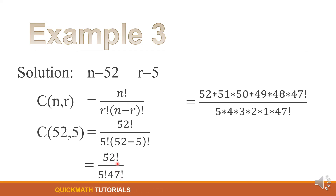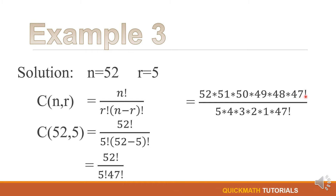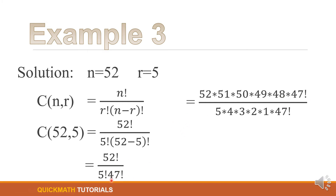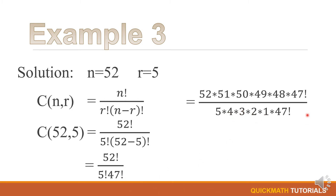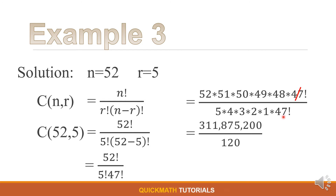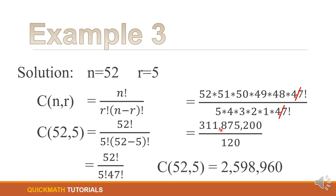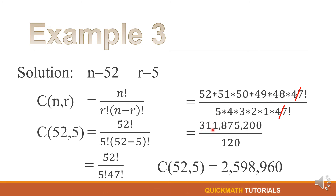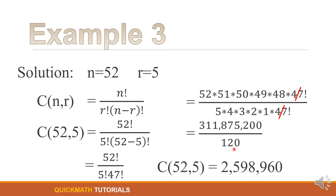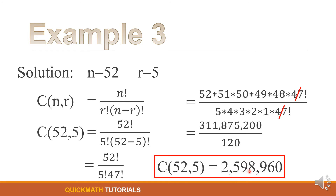52 factorial is equal to 52 times 51 times 50 times 49 times 48 times 47 factorial. We stop at 47 factorial since there is also a 47 factorial in the denominator so we can cancel them out. Over 5 factorial (5 times 4 times 3 times 2 times 1) times 47 factorial. Canceling 47 factorial, we multiply 52 down to 48, giving 311,875,200 divided by 120, which equals 2,598,960.